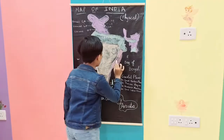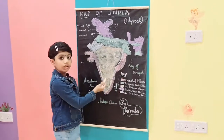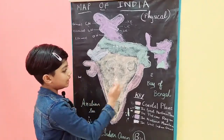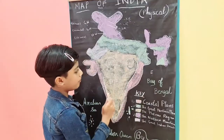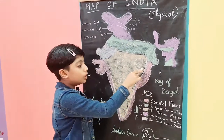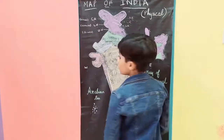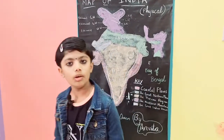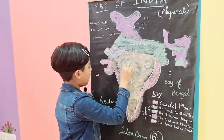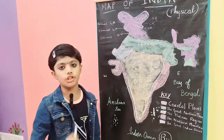The Deccan Plateau has a triangular shape and is surrounded by the Western Ghats on the west and the Eastern Ghats on the east. The Chota Nagpur Plateau covers most parts of Jharkhand, Odisha, and West Bengal. The Malwa Plateau covers most parts of the west of Madhya Pradesh.